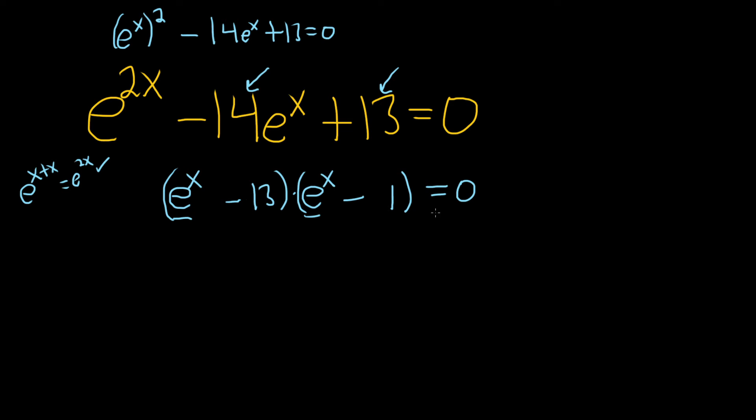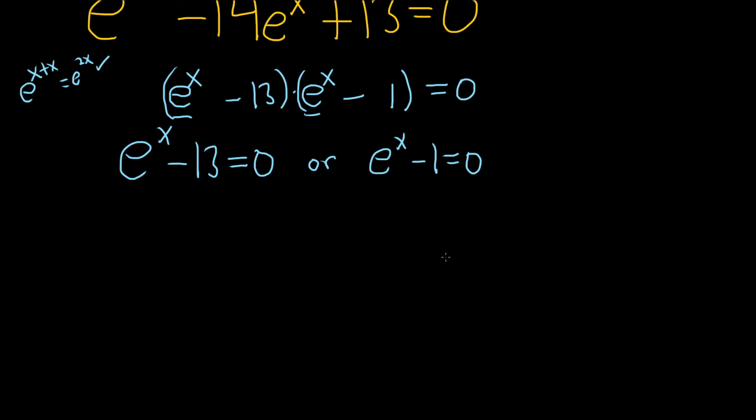You have a product equal to 0. So now you set each piece equal to 0. So this factor is equal to 0 or this factor is equal to 0. And we just solve each one individually. So in the first case, we'll just add 13 to both sides.